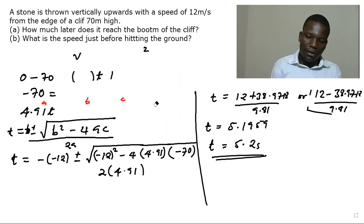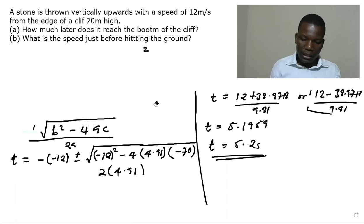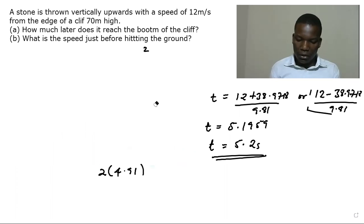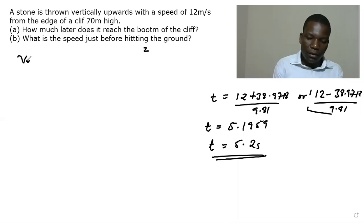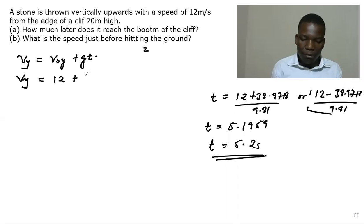So what we have here now is we're going to use the time to find the speed before it hits the ground. The equation is: final velocity in the y equals initial velocity plus g t. So we are looking for final velocity and our initial velocity is 12 meters per second. Then we have plus negative 9.81 times time which is 5.2 seconds.